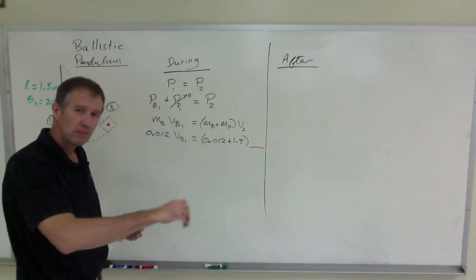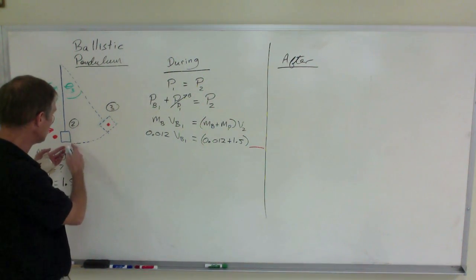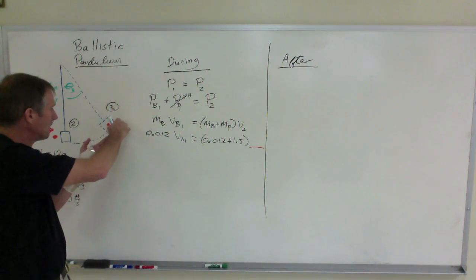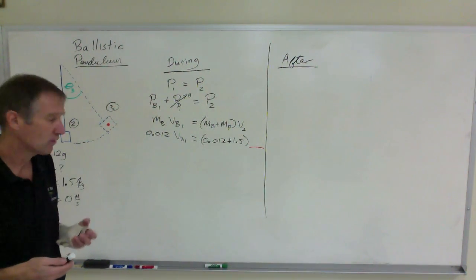Now with the pendulum, energy is conserved. The kinetic energy at the lowest point, which is at point two, the lowest point in its swing, that kinetic energy is all transformed into potential energy at the highest point in its swing, which is point three.